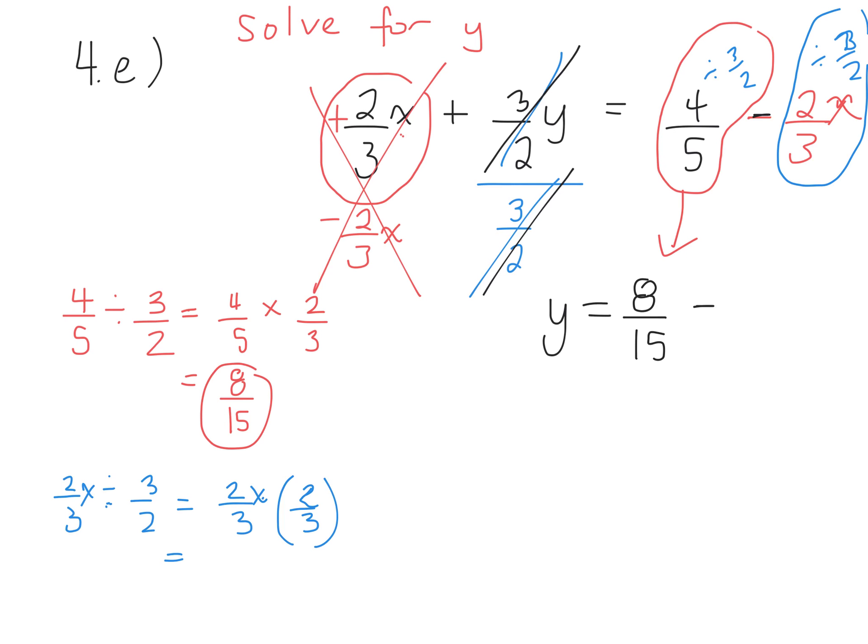Okay? 2x times 2. 3 times 3. 9. So this is the second term. And this becomes 4 over 9x. So the final answer is y equals 8 over 15 minus 4 over 9x.